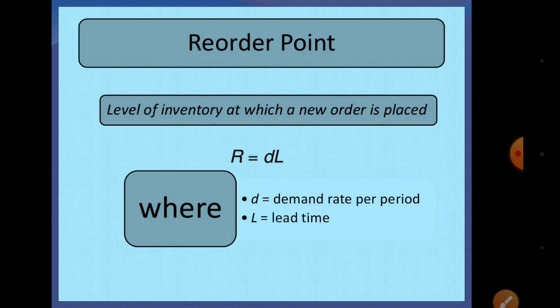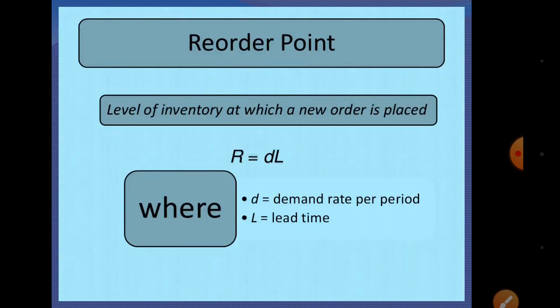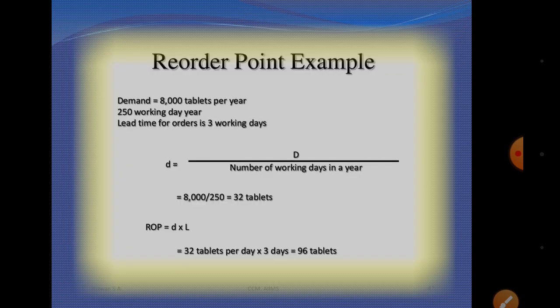The reorder point is the level of inventory at which a new order is placed. R is equal to D into L, where D is the demand rate per period and L is the lead time.